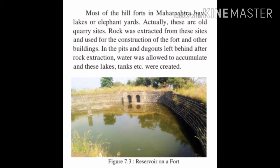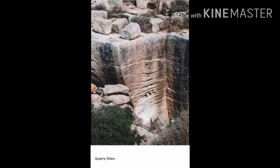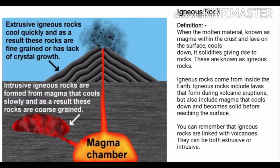Most of the hill forts in Maharashtra have lakes or water tanks — these are actually old quarry sites. Rock was extracted from these sites and used for the construction of forts and other buildings. In the pits and dugouts left behind after rock extraction, water was allowed to accumulate, and these lakes and tanks were created. Quarry sites means the extraction of rocks, as you can see on the screen.